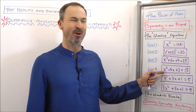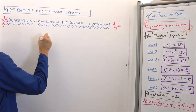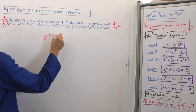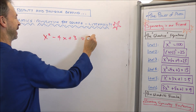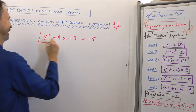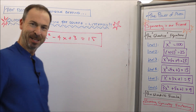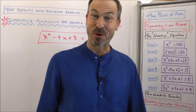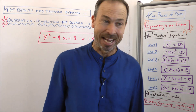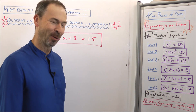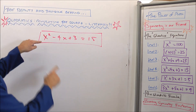Okay, here comes level 4. Let's do this one: x squared minus 4x plus 3 equals 15. I'm feeling confident, I'm feeling good, so I'm wondering what the trick is on this one. There's got to be a little snag that makes it a little more complicated to be level 4. Well, let's find out.